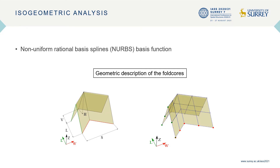On the right, we have the same core but defined by a single NURBS patch. It consists of a set of control points forming a control net and knot vectors. This approach is also used in modern computer-aided design software. The isogeometric analysis can then be performed with this model definition without any further meshing or discretization.